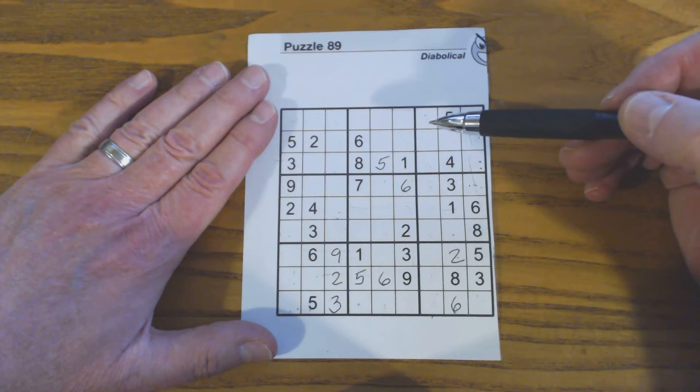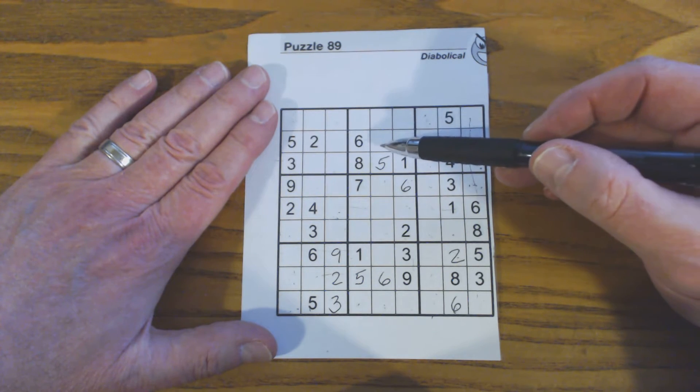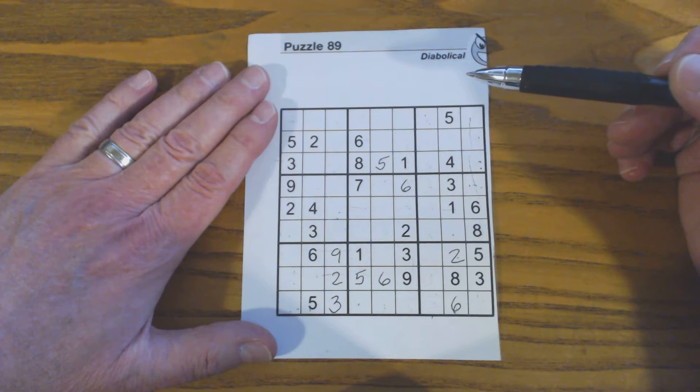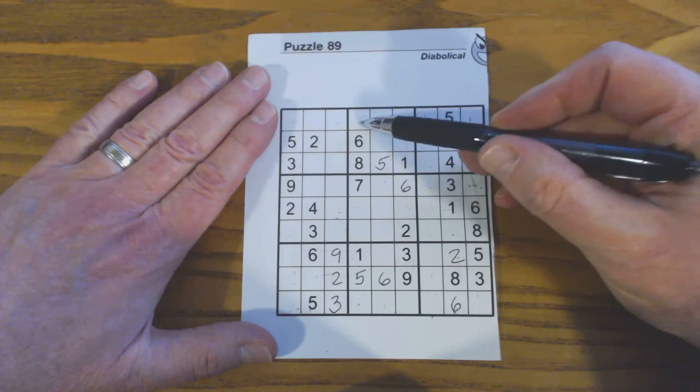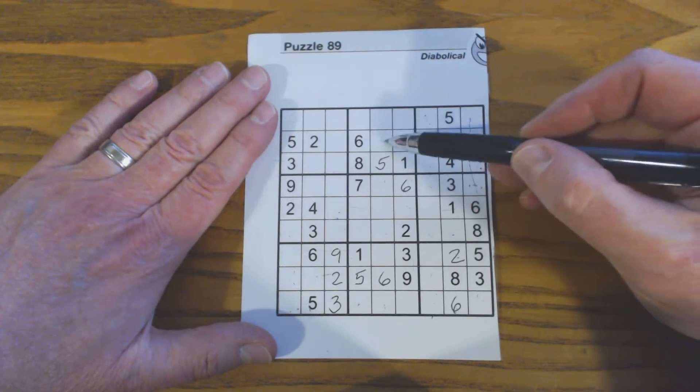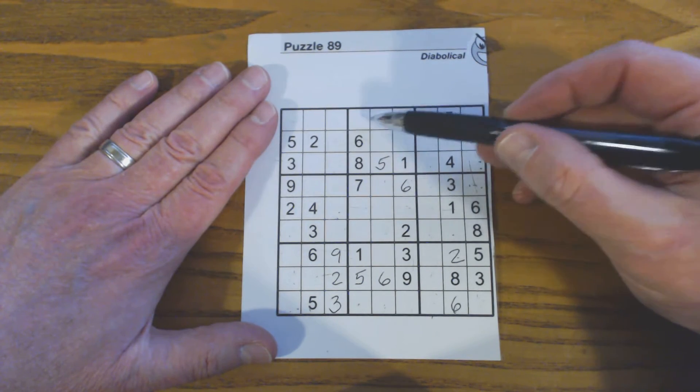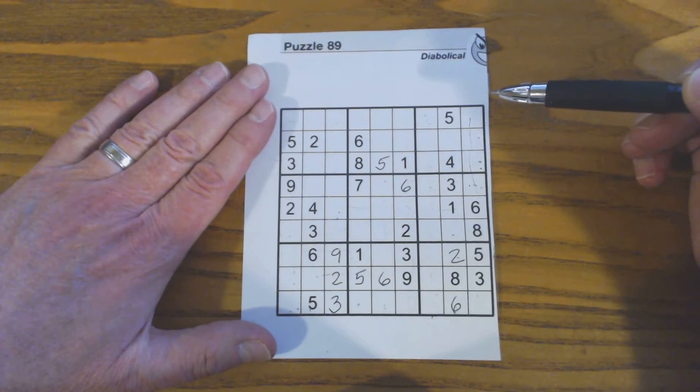So those are triplets, although we can't fill them in yet. We don't have enough information. We know one of these is a 2 because of this 2 here, but the 3 and the 9 can go anywhere in those three cells.